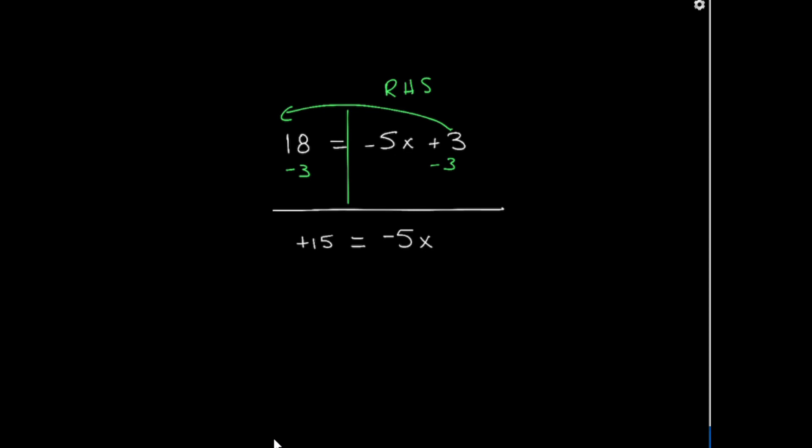Now again, on the right-hand side, what I have is I have this negative 5 being multiplied by x. So I have to divide both sides of my equation by negative 5. And now I'm left with negative 5 over negative 5 is 1x is equal to positive 15 divided by negative 5 is equal to negative 3.